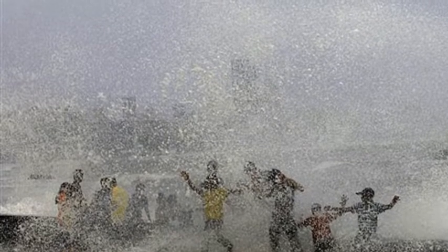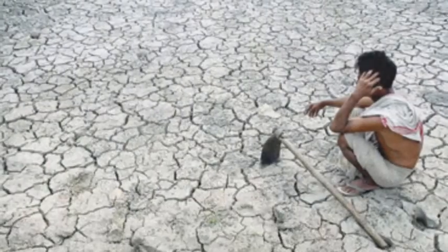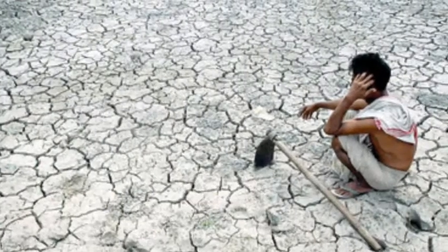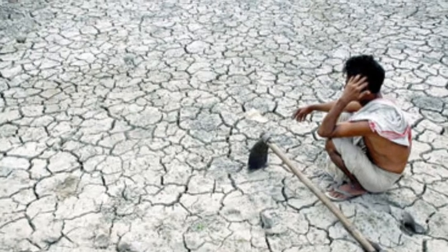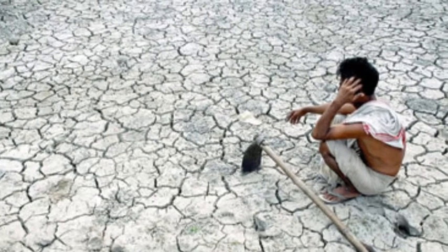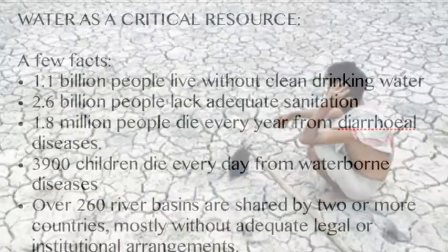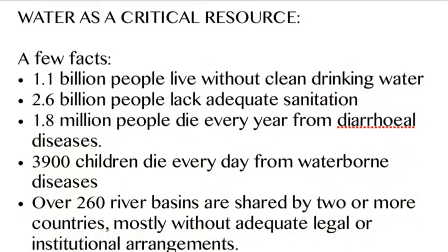The monsoon that would have happened in India doesn't occur, and you can see how a farmer has nothing to grow — his crop is gone and dead.